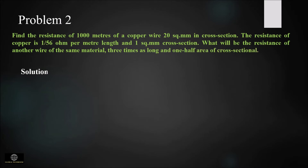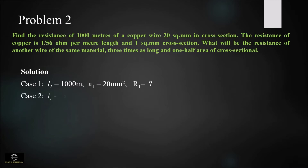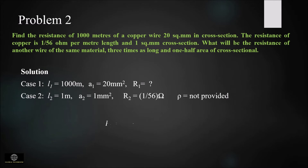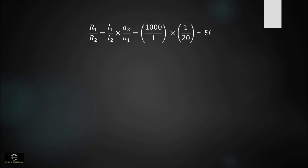Two cases are given. In the first case the length is 1000 meter and the area is 20 mm square, and we have to find the resistance. In the second case the length is 1 meter, area is 1 mm square, and the resistance is 1/56 ohm. Since resistivity is not provided, we apply R = ρL/A and consider the ratio R1/R2, substituting the values of length and area to get the ratio as 50. So R1 = 50 × R2 = 50 × (1/56), giving R1 = 25/28 ohm.